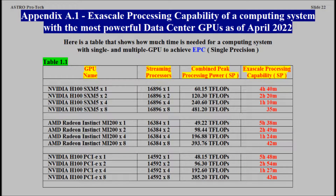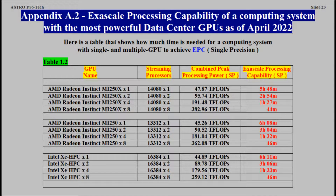Appendix A1: Exascale Processing Capability of a Computing System with the most powerful data center GPUs as of April 2022. Appendix A2: Exascale Processing Capability of a Computing System with the most powerful data center GPUs as of April 2022.